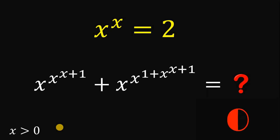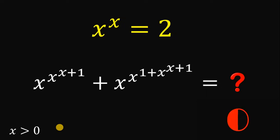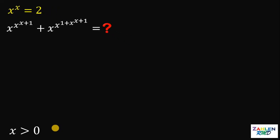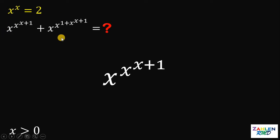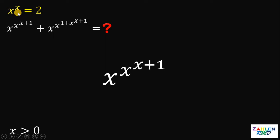Now let's answer this question together. I hope you paused this video so you can try this question first. Take note that the given equation is x raised to x equals 2, and we want to evaluate this expression. What we're going to do is get the first term, x raised to x raised to x plus 1, and simplify until we reach x raised to x, because we know the value of x raised to x — this is just 2.